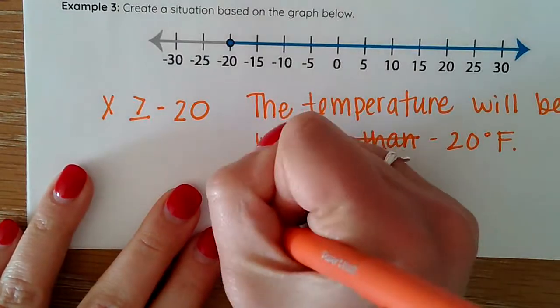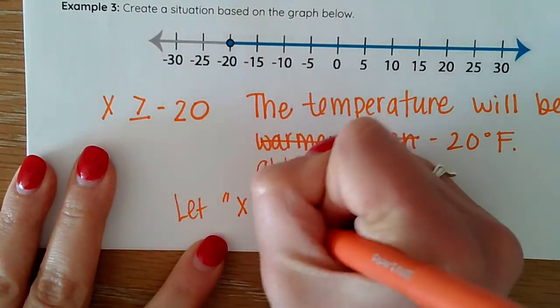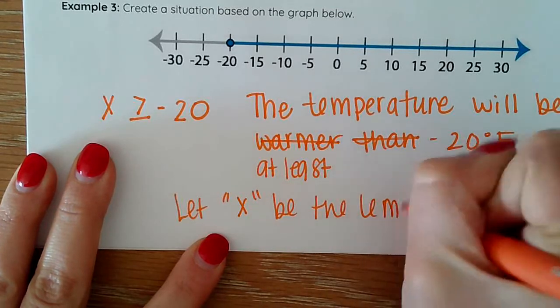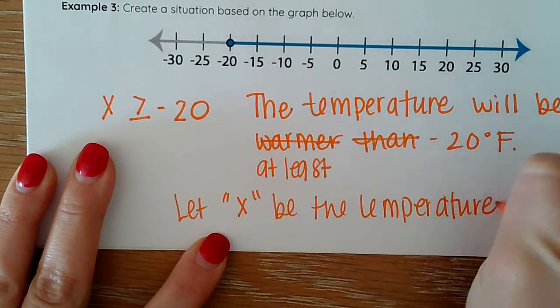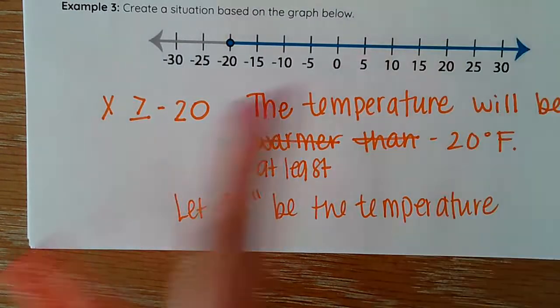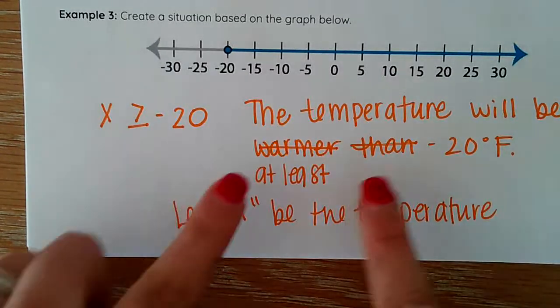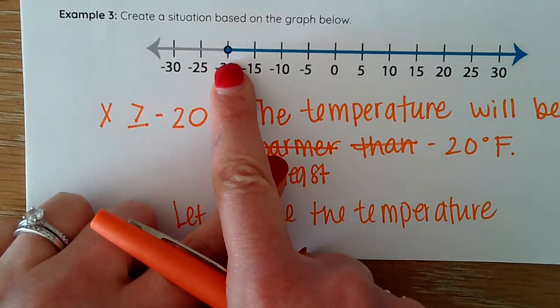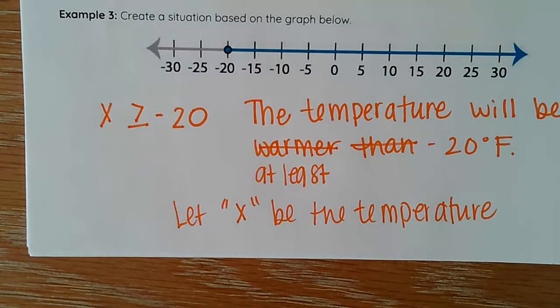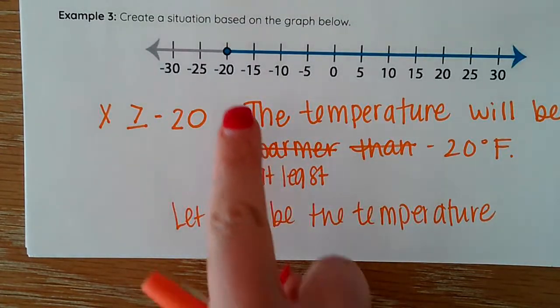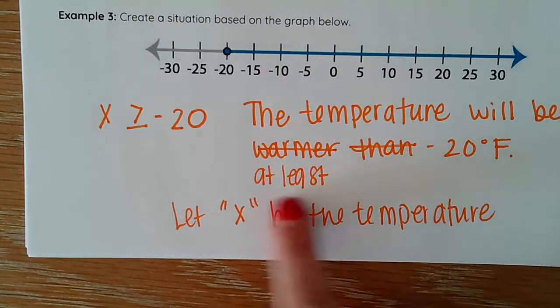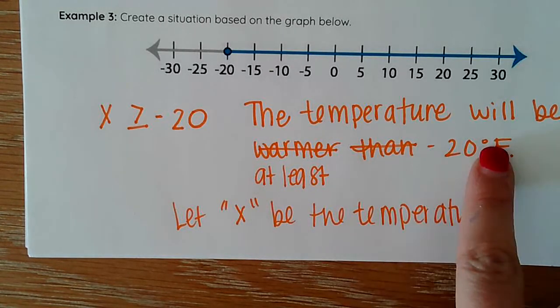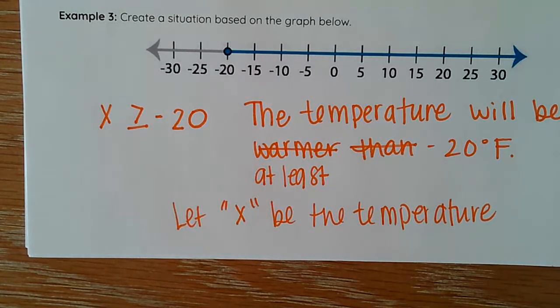And there you have it. So you've got your graph. You turned it into an inequality. You determined a situation. You checked that it made sense. If I kept it at warmer than then that circle couldn't be closed. It would have to be open because the warmer than would imply that it couldn't be negative 20. This situation now shares with me that it could be at least negative 20 degrees Fahrenheit. So it can be negative 20 or it can be warmer. I make sure I have my let statement. I make sure they all match. And there you have it.